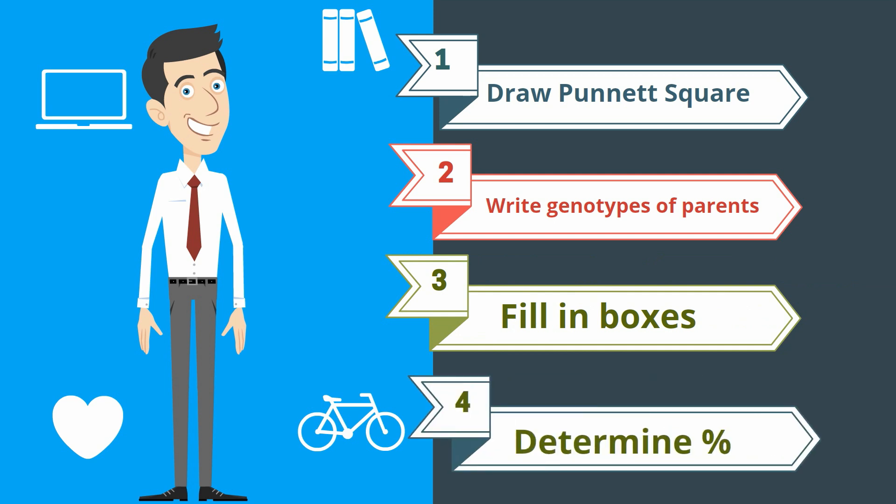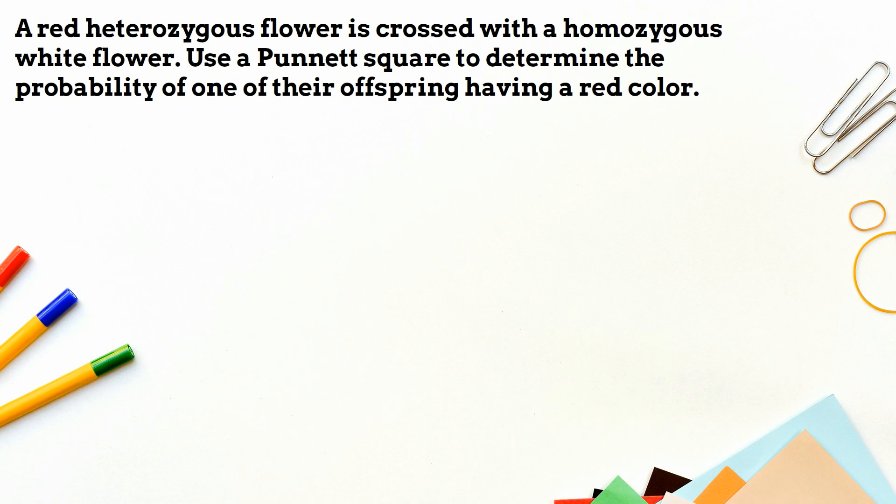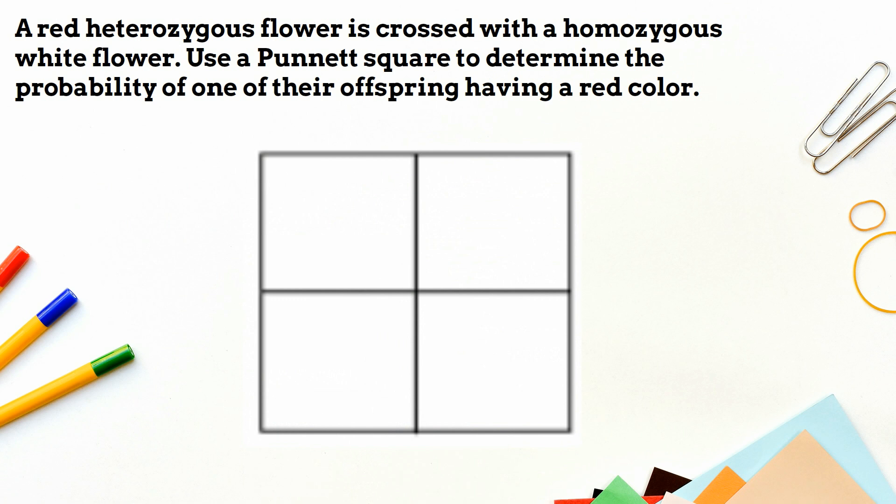Let's work an example. A red heterozygous flower is crossed with a homozygous white flower. Use a Punnett square to determine the probability of one of their offspring having a red color. Let's first draw the Punnett square. Then we're going to write the genotypes of the parents.